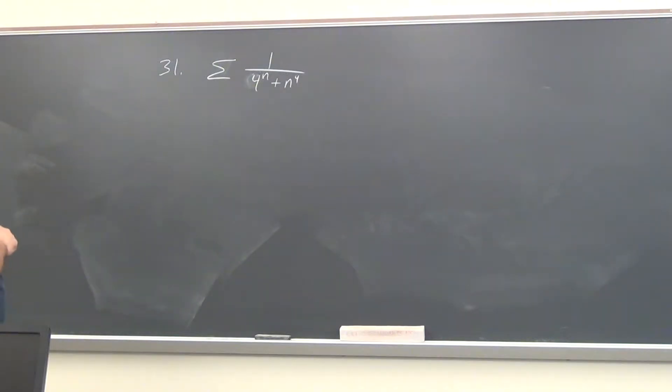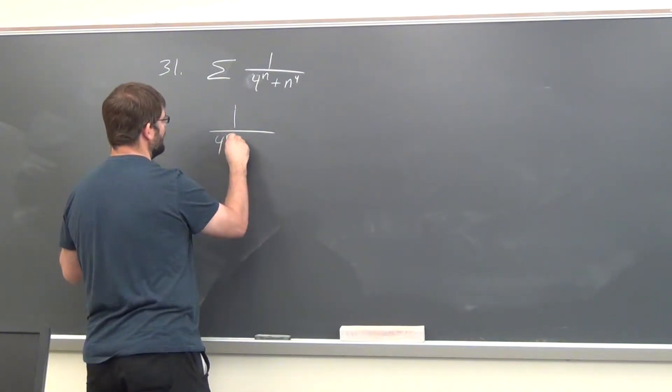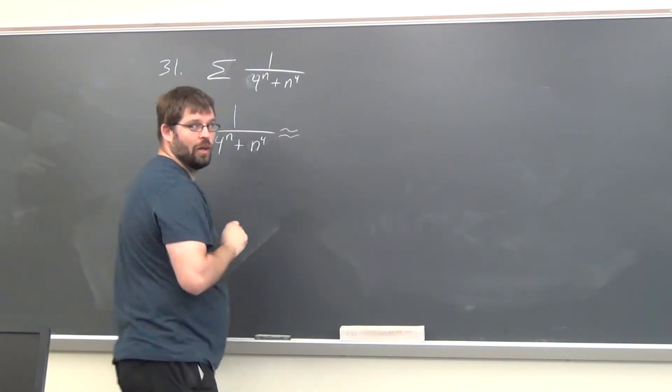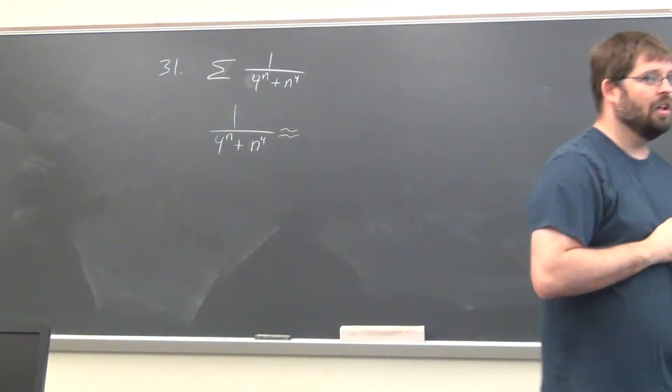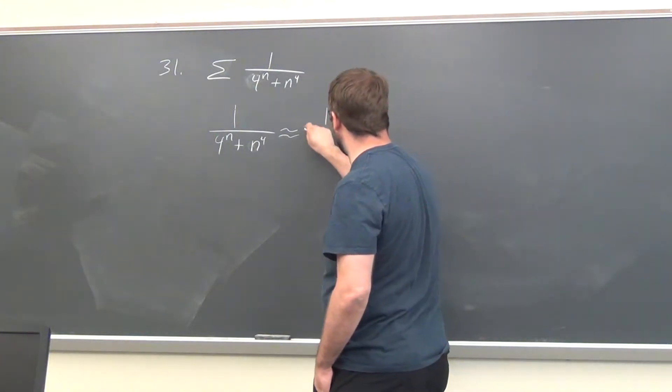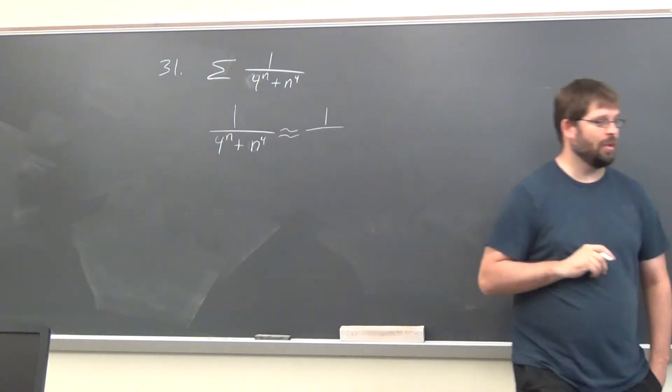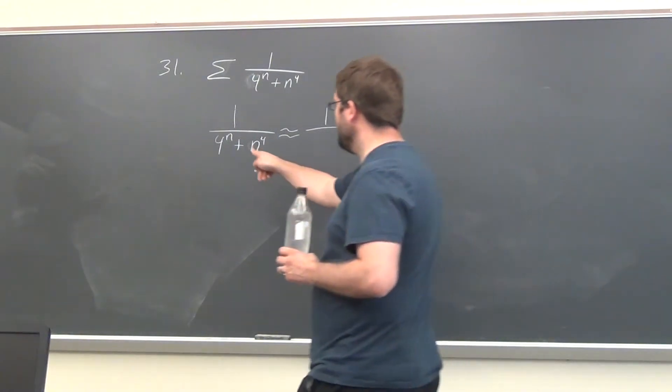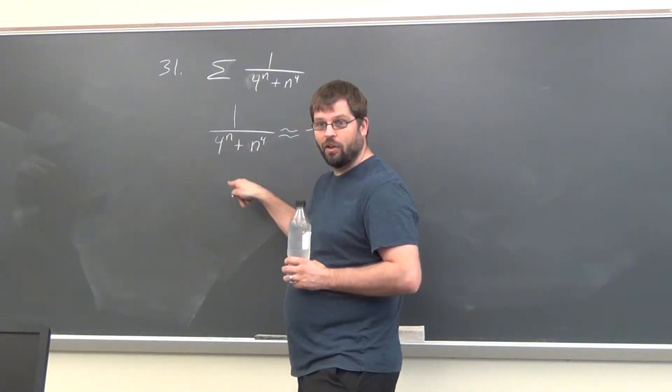You're given this series and asked to determine whether it converges or diverges. In this section, we were taking the terms of the series and figuring out what they sort of act like. One will just act like one up top. What about the bottom? As n gets big, which one of those is going to control the behavior? Four to the n or n to the fourth? You should use 4 to the n. Remember, exponentials grow faster than polynomials.